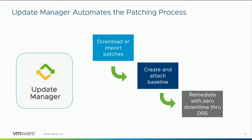In 6.7 Update 1, which we announced this week, we are removing the requirement for a database for UMDS. If you want to use UMDS, you no longer have to set up a SQL Server database or a Postgres database if you're on Linux — it's just a really quick install now. The engineers realized they didn't need a full-fledged database to make this work. Also, there is a Linux version now, so you don't even have to run it on Windows anymore.